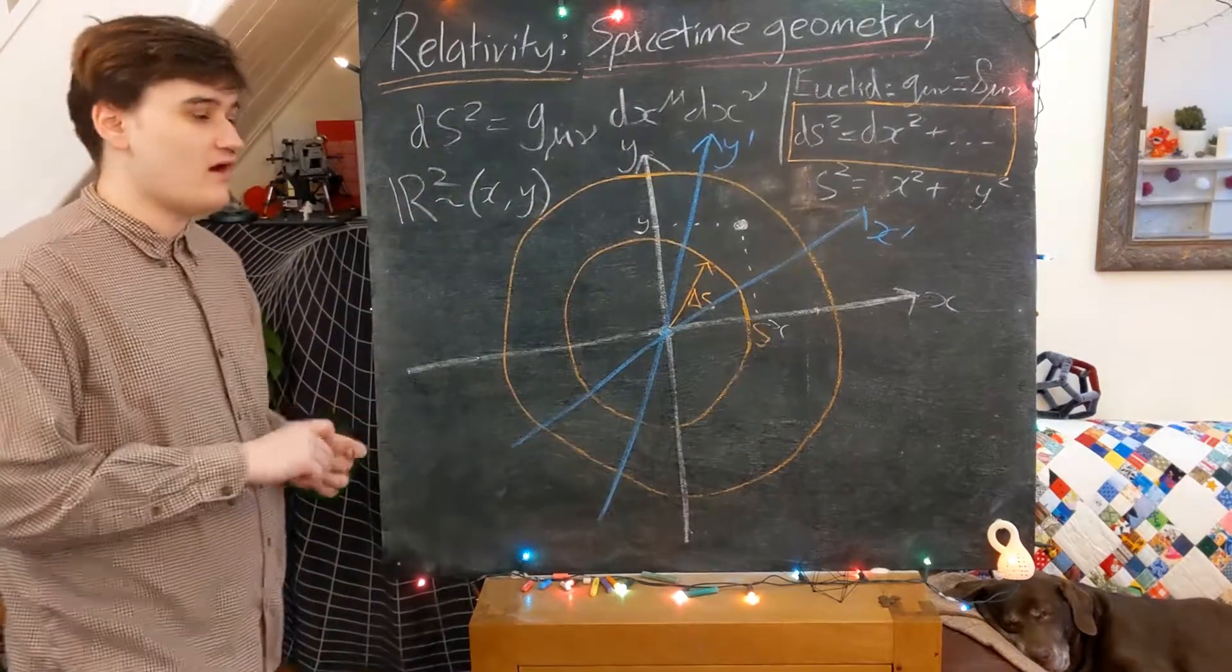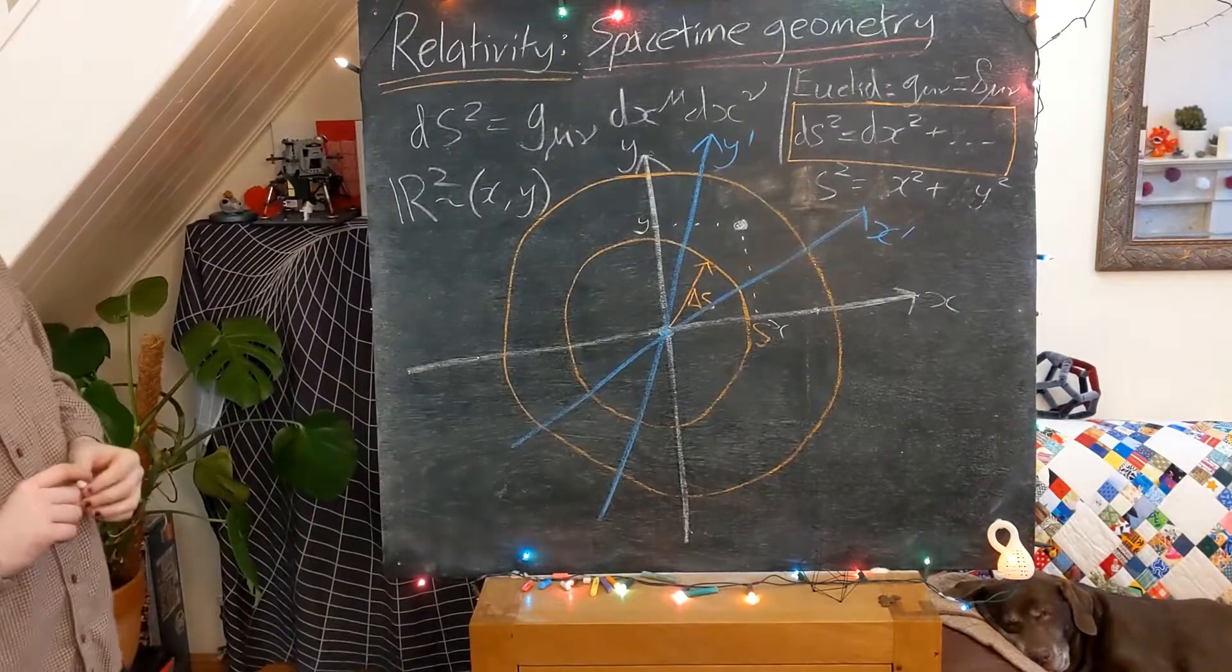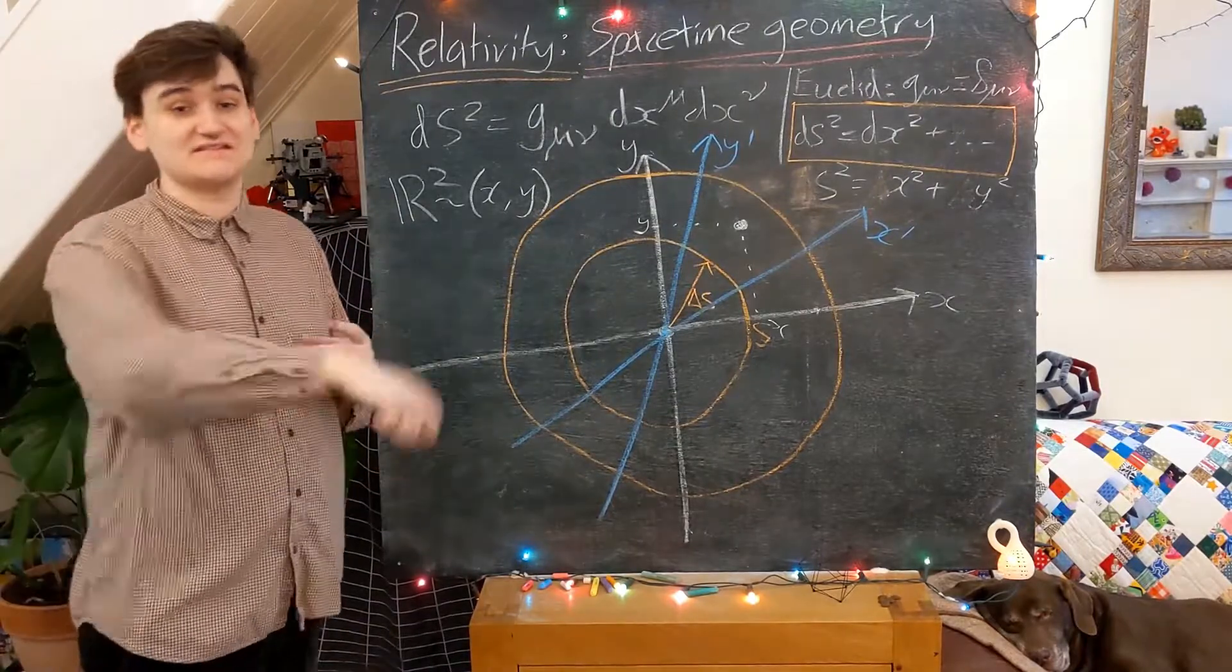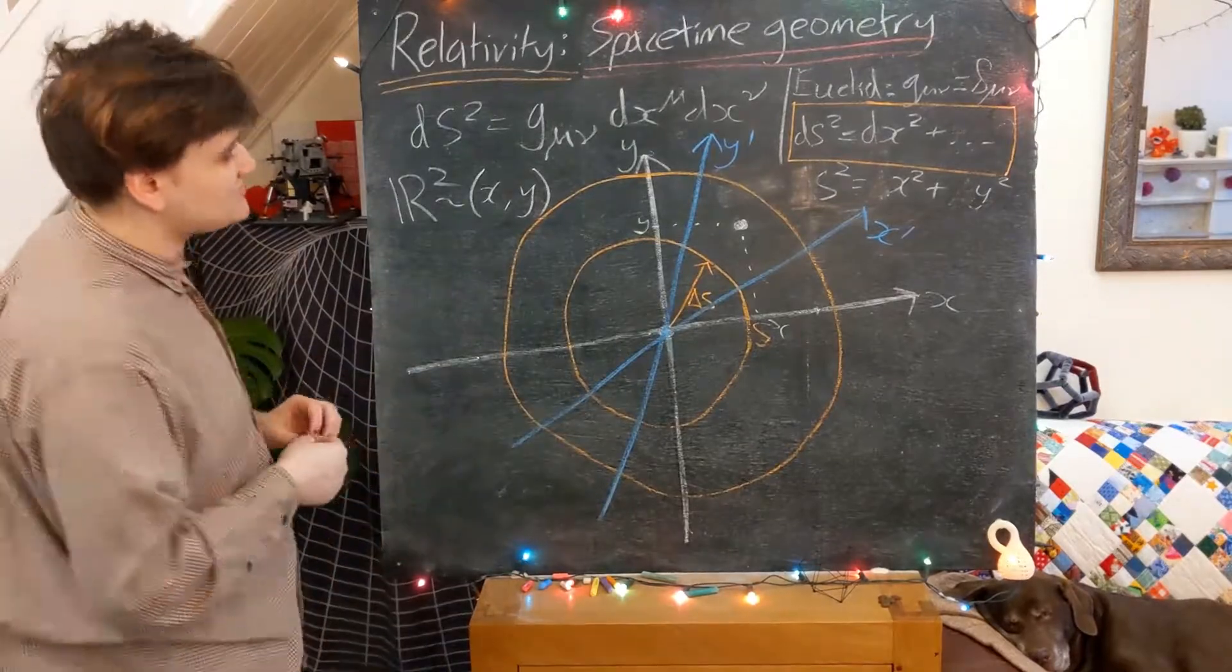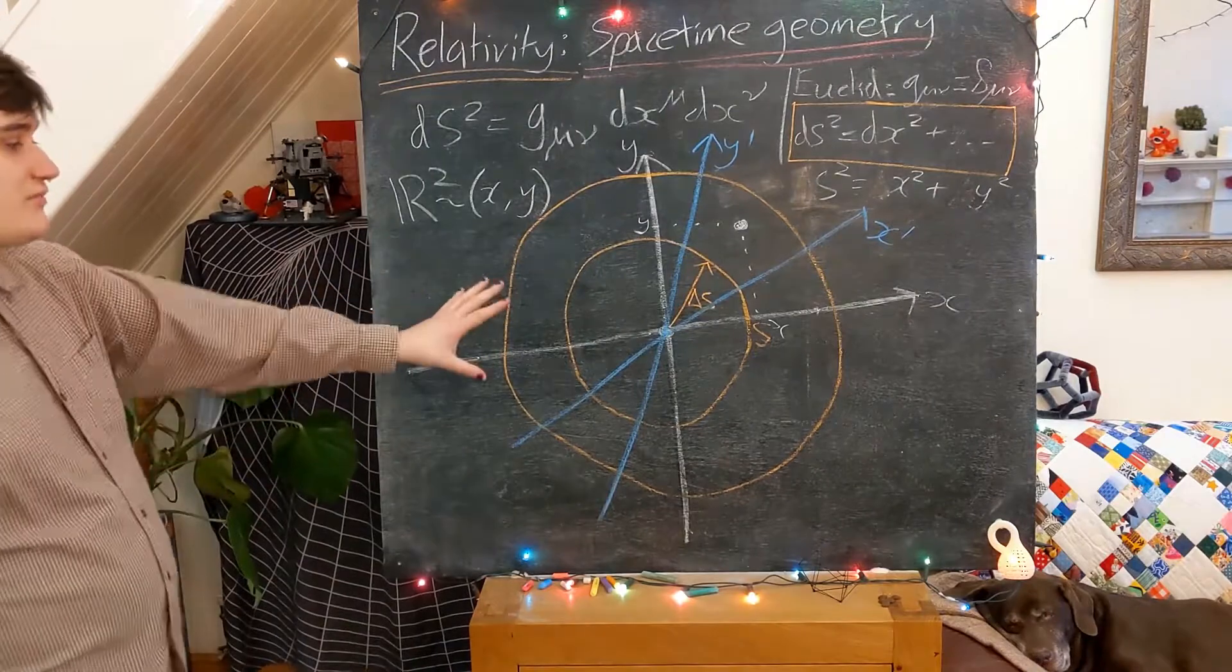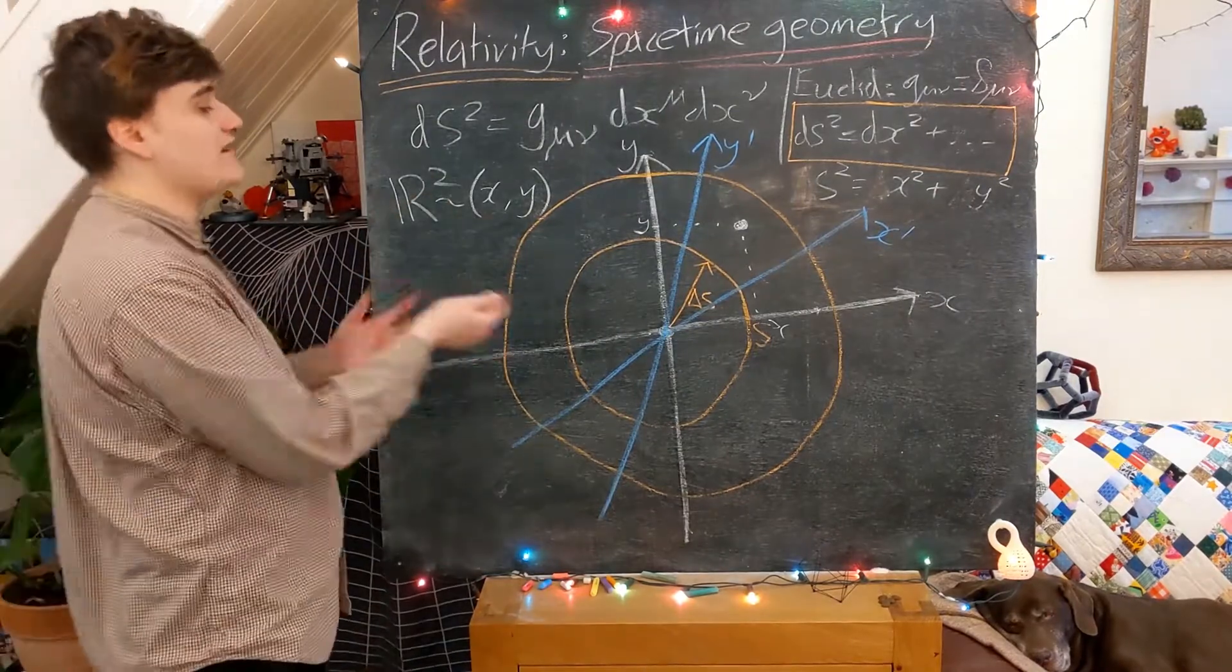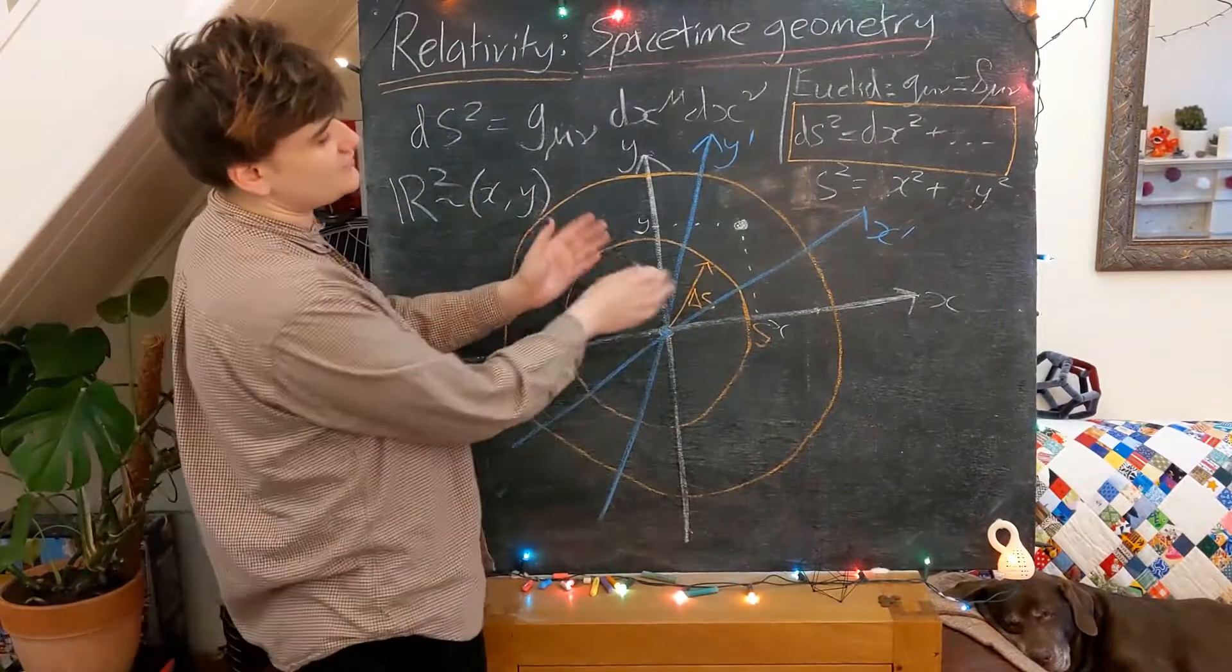And so we might ask, well what's the line element going to look like in a new set of coordinates? We're going to ask this question in much more detail in upcoming videos when we discuss in much more detail coordinate translations, but for now I just want to point something out. The important thing to realize when we draw a picture like this is that the line element is going to be constant on this picture for both of these coordinate systems.